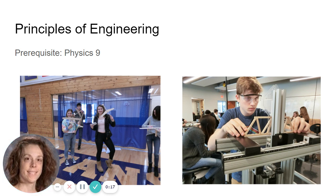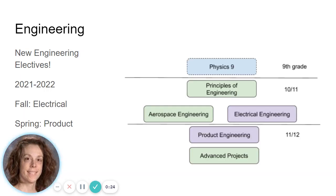If you want to jump into engineering, the place to start is Principles of Engineering. The only prerequisite for this class is Physics 9, so you should be all set. After you take Principles of Engineering, we have some advanced engineering electives, including two new electives for the 2021-2022 school year: Electrical Engineering offered in the fall and Product Engineering offered in the spring. You should check out the course descriptions to see if they sound interesting to you.